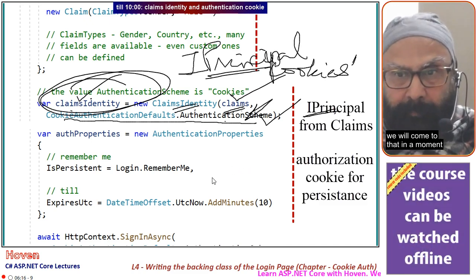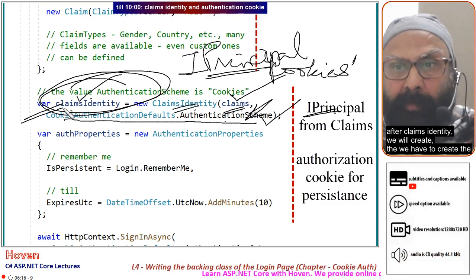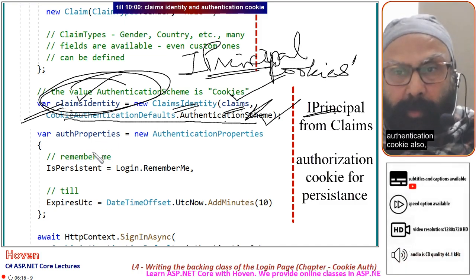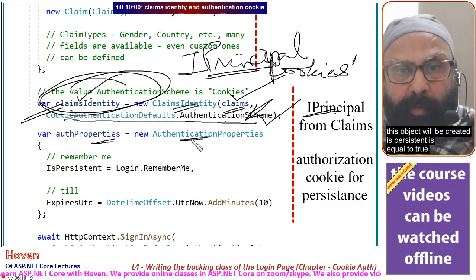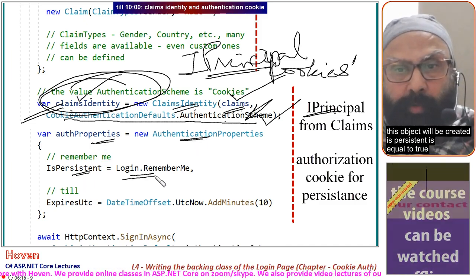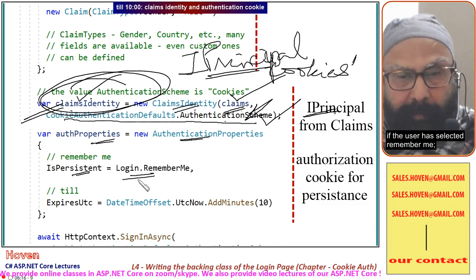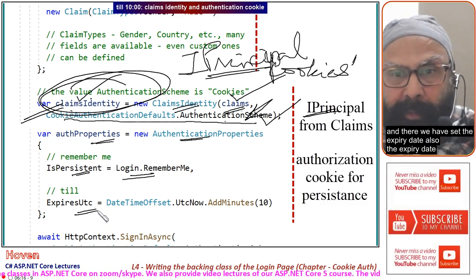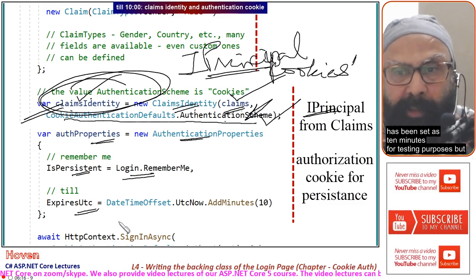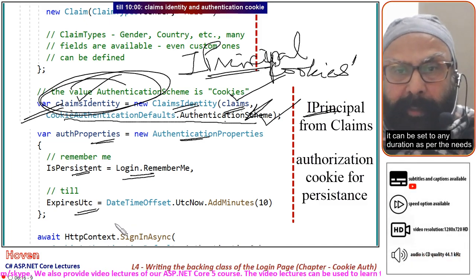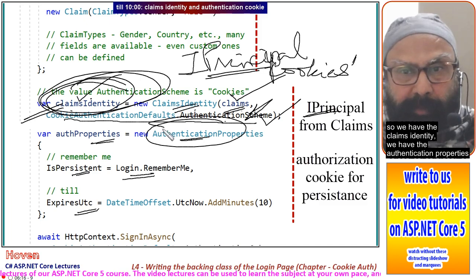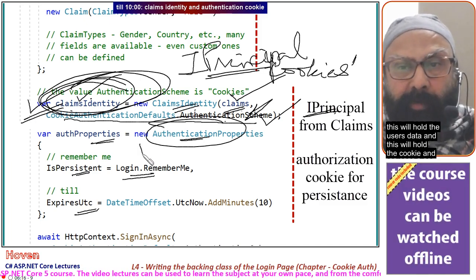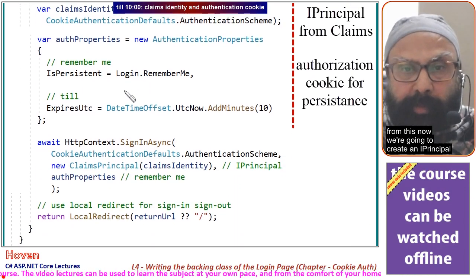After the ClaimsIdentity, we have to create the authentication cookie for persistence. If the user has selected remember me, an AuthenticationProperties object is created with IsPersistent set to true, and the expiry date is set — currently 10 minutes for testing purposes, but it can be set to any duration as needed. So we have the ClaimsIdentity holding the user's data and the AuthenticationProperties holding the cookie settings, and from these we will create an IPrincipal.